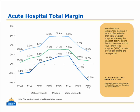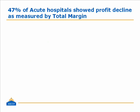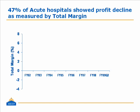Let's take a look at what we can do with this slide. Here's how I redid it. What we found in the latest quarter is that 47% of our acute hospitals showed a decline in their profits when measured using the total margin. If we look at their performance across the last number of fiscal years and the total margin for those hospitals in the 75th percentile, this is how it has moved over the last few years.